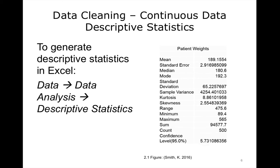Now let's take a look at descriptive statistics, which give a basic overview of the data, including the mean or average, the median or the midpoint, and the mode — the most frequently occurring value — the smallest and largest values, and the total number of records. Running descriptive statistics is an excellent way to quickly check if the values are reasonable. For example, this set of data of 500 patient weights shows a mean weight of 189 pounds, with a minimum of 89 and a maximum of 565. To generate descriptive statistics in Excel, click Data, then Data Analysis, then Descriptive Statistics.